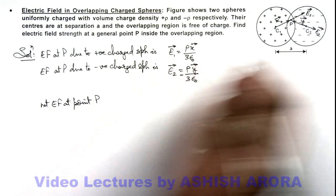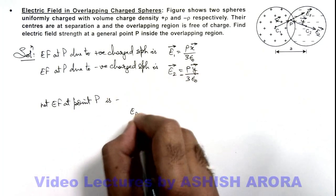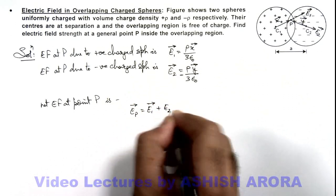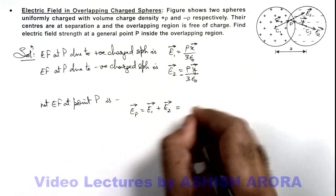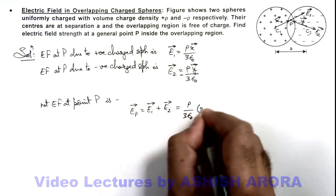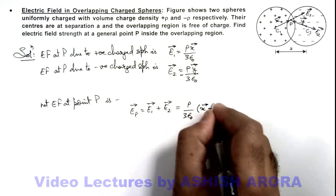Due to both of these spheres can be given as EP vector is equal to E₁ vector plus E₂ vector. So this will be if we substitute the values, ρ by 3ε₀ times x vector minus y vector.